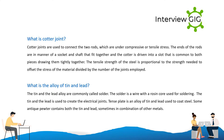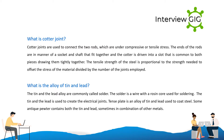What is a cotter joint? Cotter joints are used to connect two rods which are under compressive or tensile stress. The ends of the rods are in the form of a socket and shaft that fit together, and the cotter is driven into a slot common to both pieces, drawing them tightly together. The tensile strength of the steel is proportional to the strength needed to offset the stress divided by the number of joints employed.